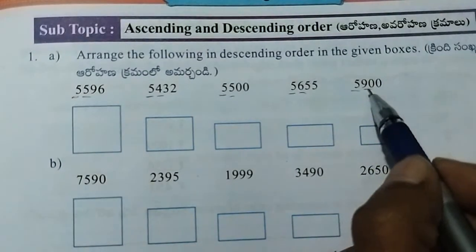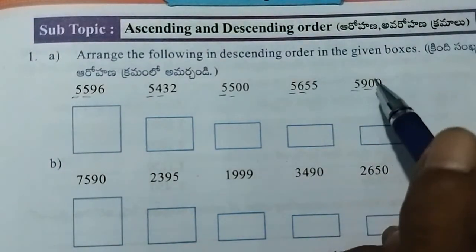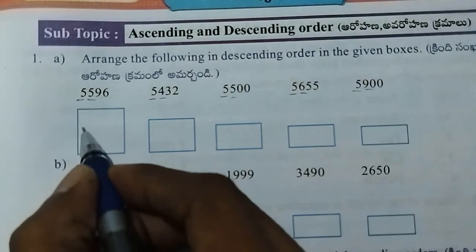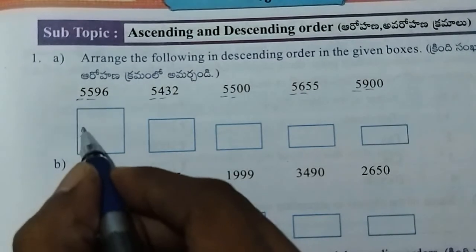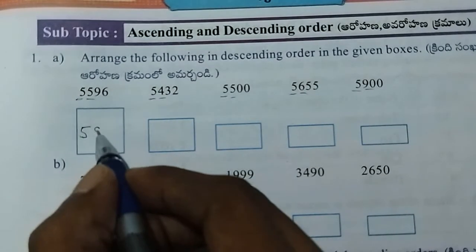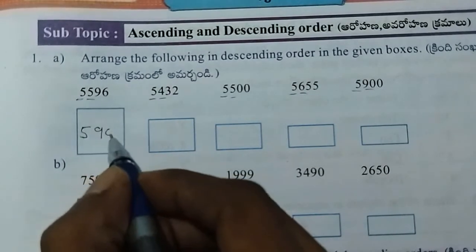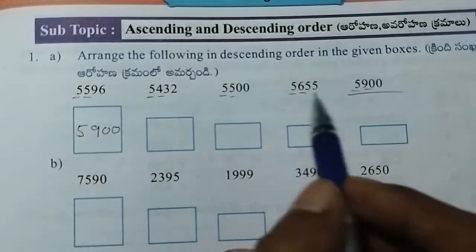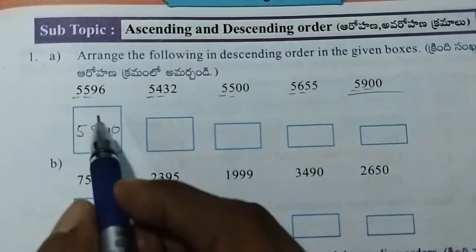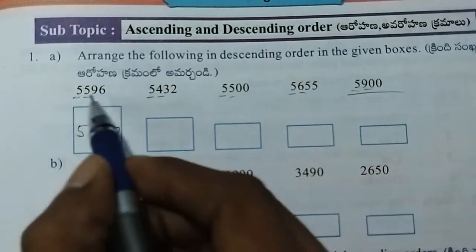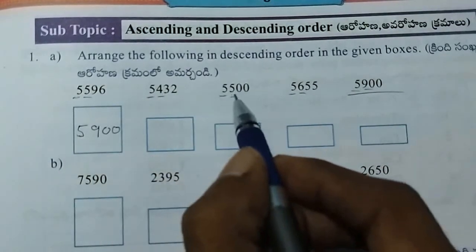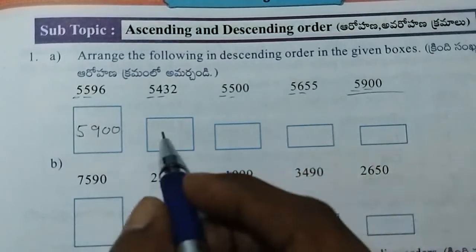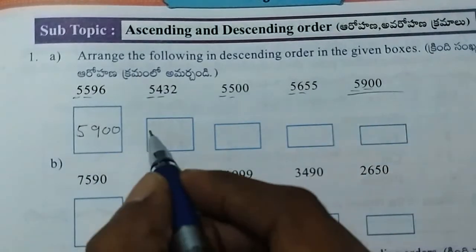In the 100s place we have 5, 5, 5, 5, 5. Next, check among the 4 numbers. The 100s digit values are 5, 4, 5, 6. The big number is 6, so the first number is 5,655.